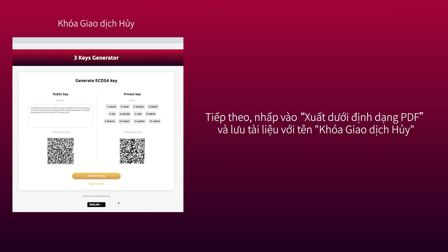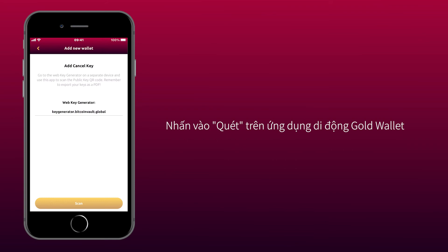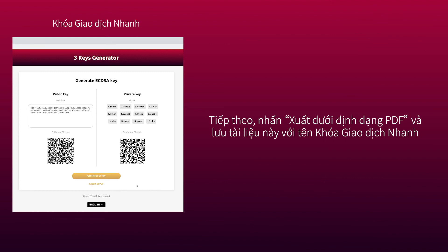Next, click Export as PDF and save this document as a cancel transaction key. Now click Generate New Key to generate and stay on the website. Tap Scan on the GoldWallet mobile app. Use your mobile device to scan the public key QR code. Next, click Export as PDF and save this document as a fast transaction key.